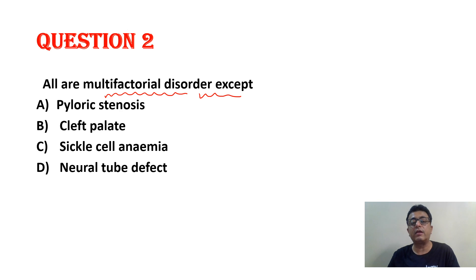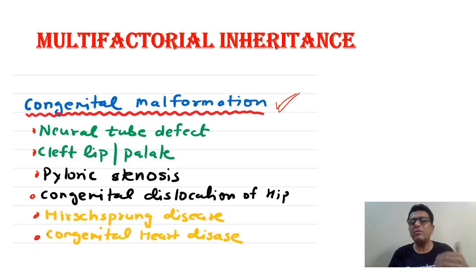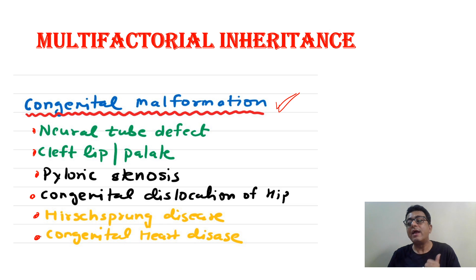Which of the following is a multifactorial disorder? We need to remember examples. Congenital malformations that are multifactorial include: neural tube defect, cleft lip and palate, pyloric stenosis, congenital dislocation of hip, Hirschsprung disease, and congenital heart disease. These all are multifactorial inheritance.